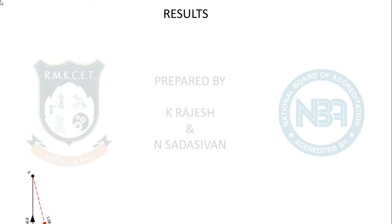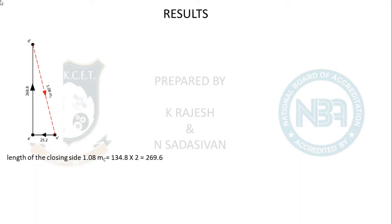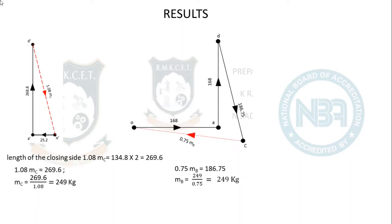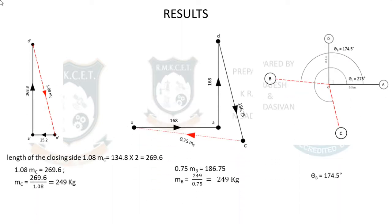Results summary: mass B = mass C = 249 kg. Direction θB = 174.5°, θC = 275°, both measured anticlockwise from horizontal A.